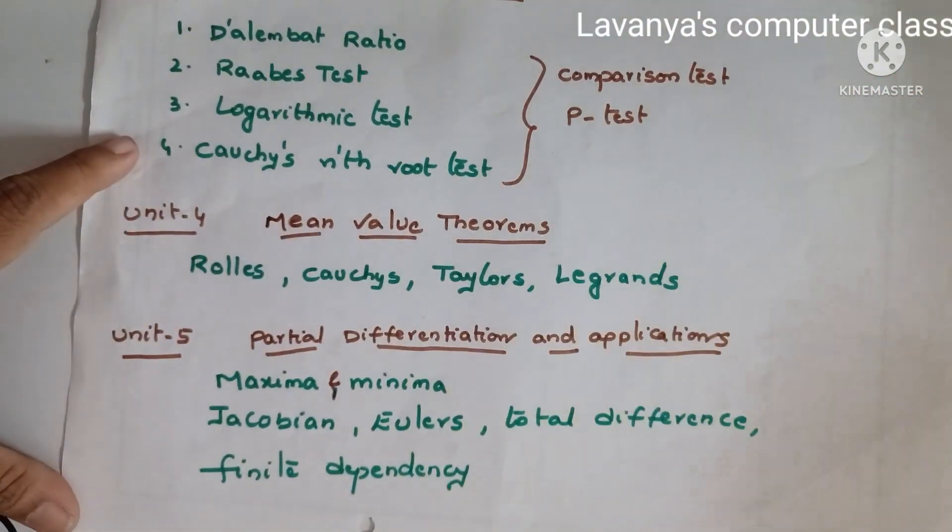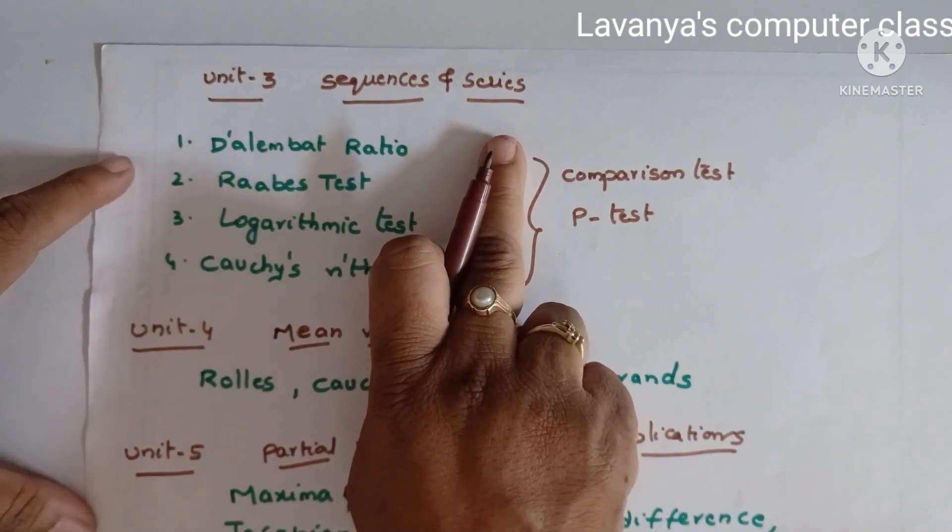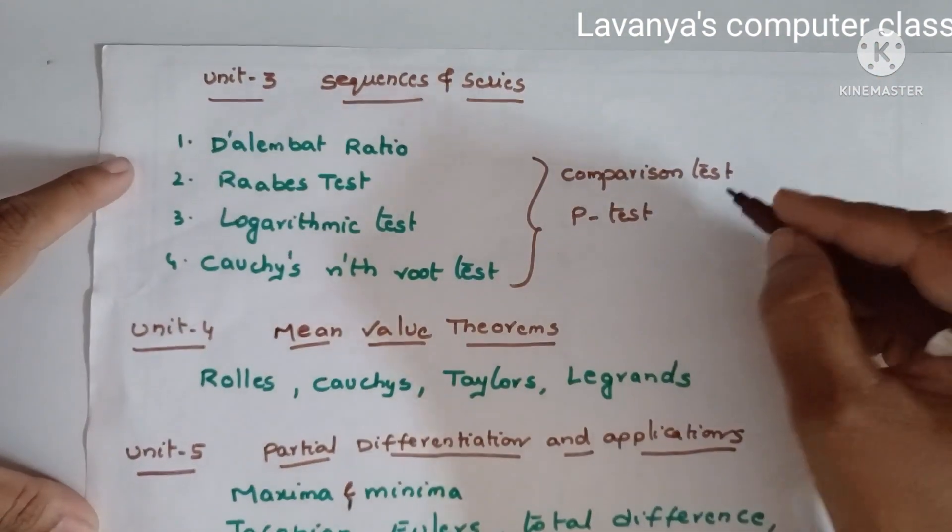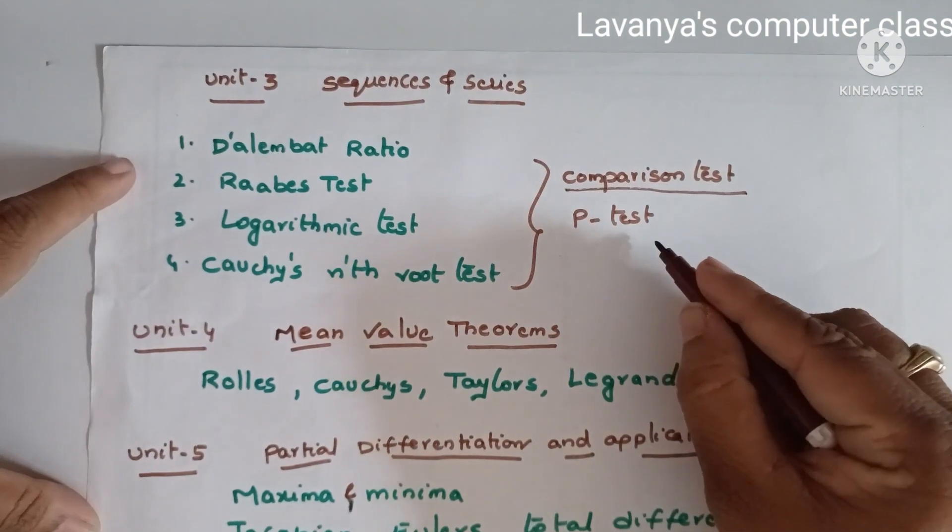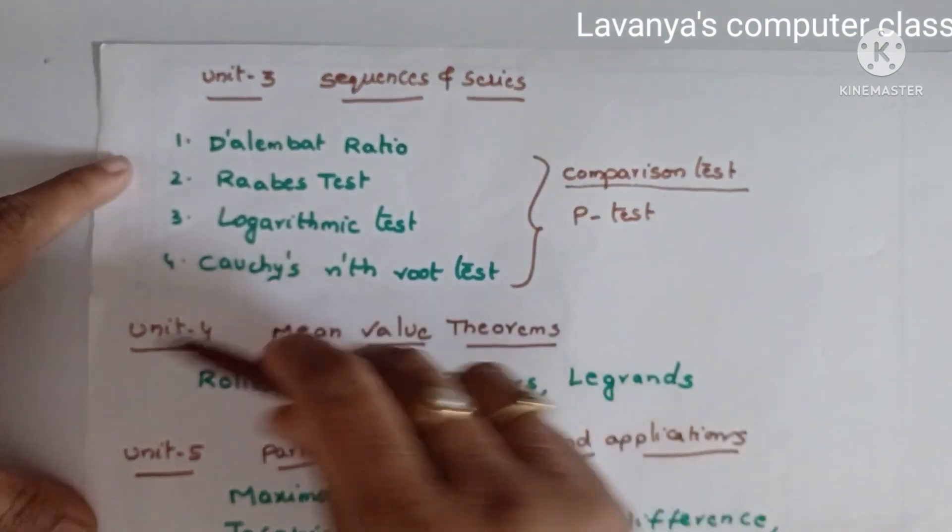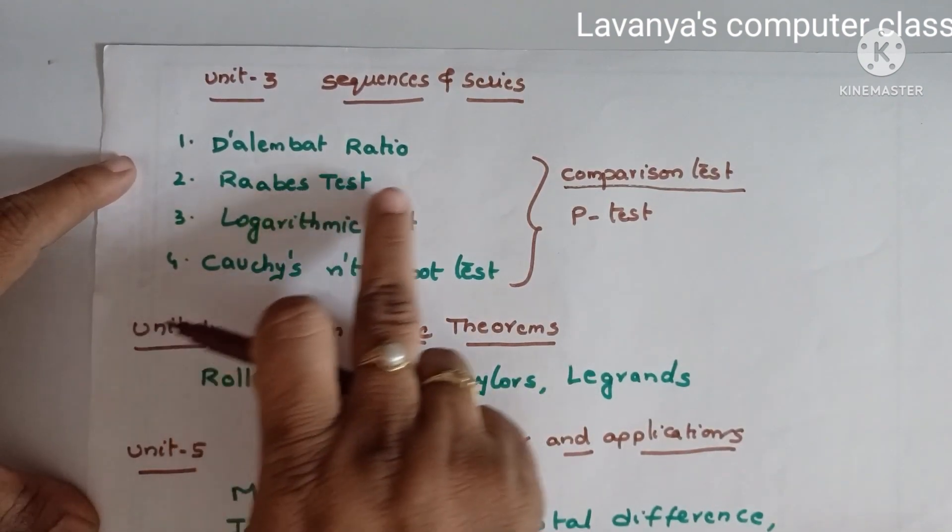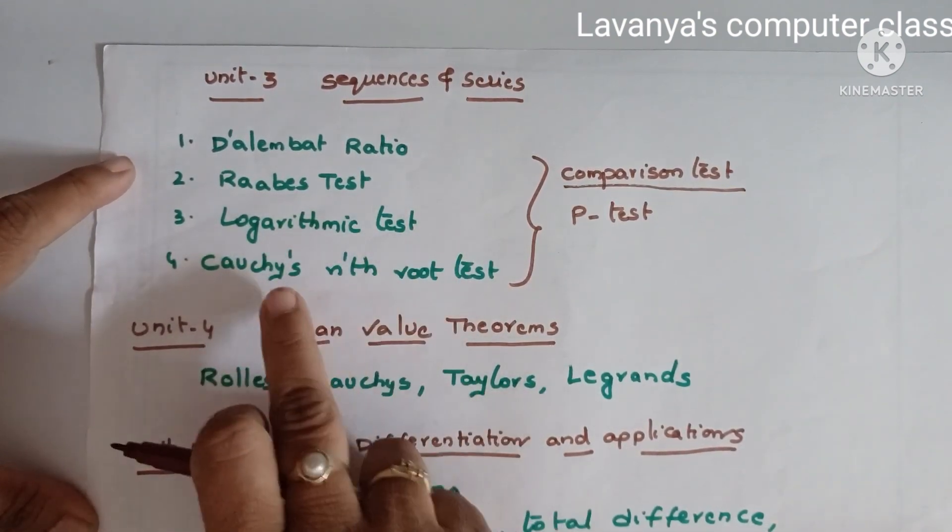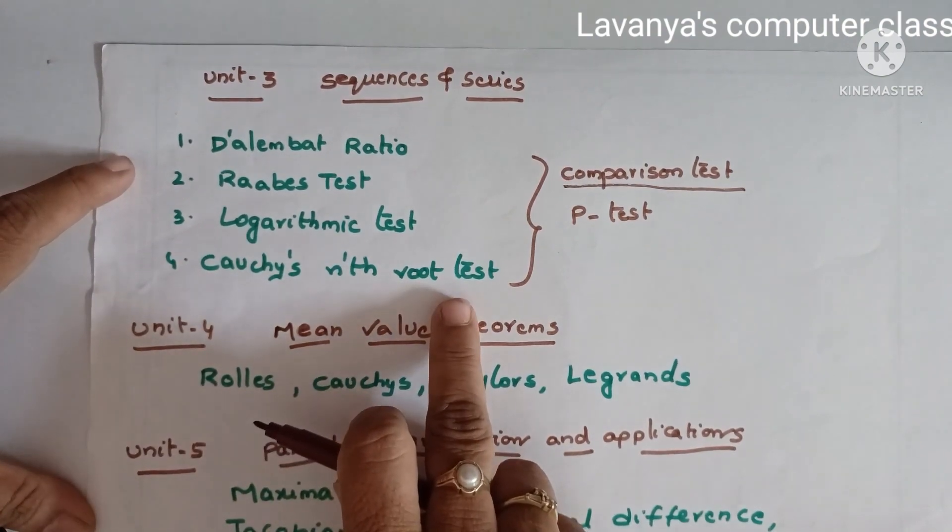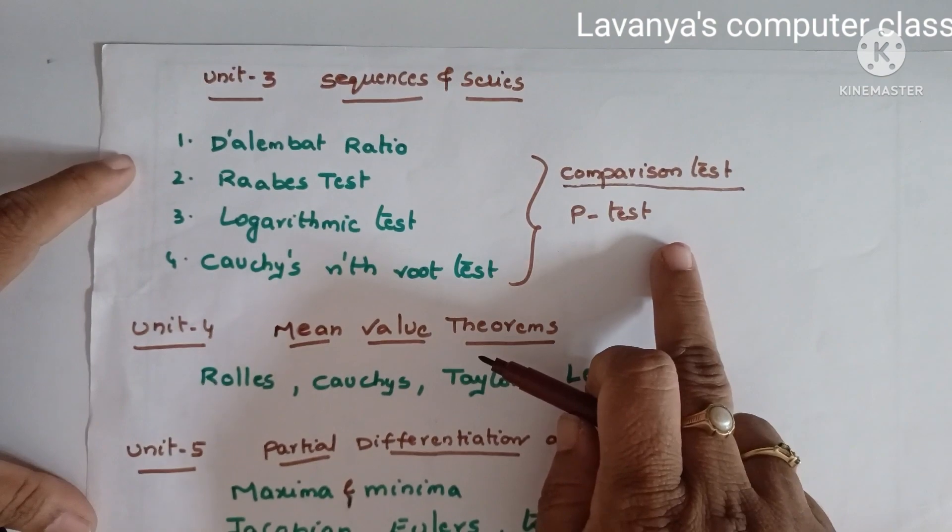Next, unit three is sequences and series. In sequences and series, all the theorems are learned like comparison test and p-test. First one is D'Alembert ratio, Raabe's test, logarithmic test, and Cauchy's nth root test. For these four we compulsory use comparison test and p-test.